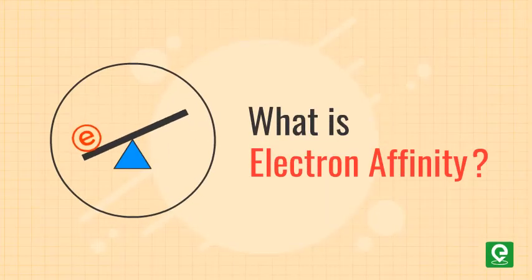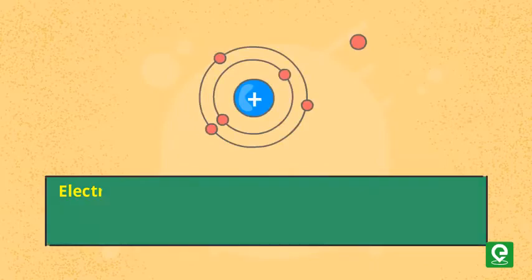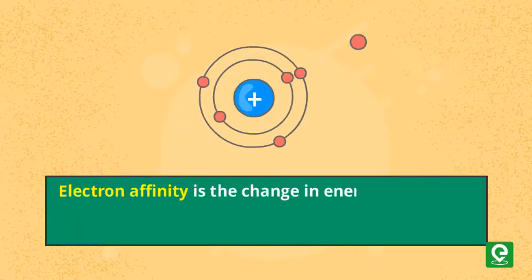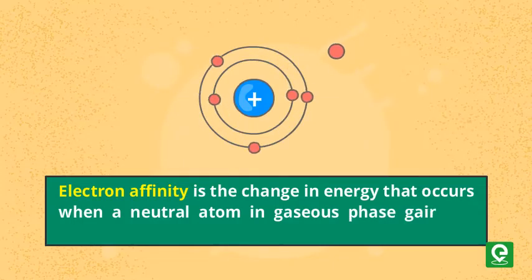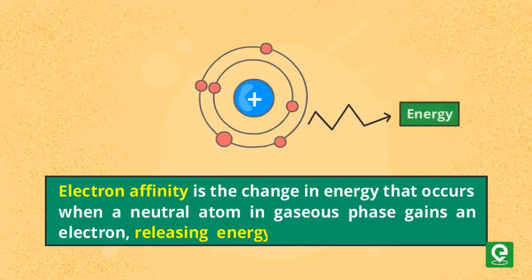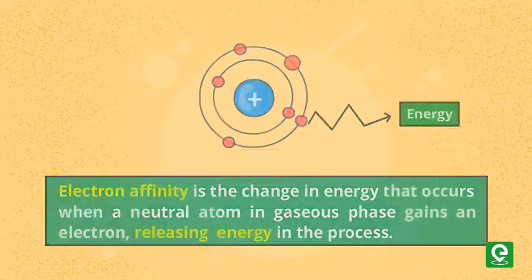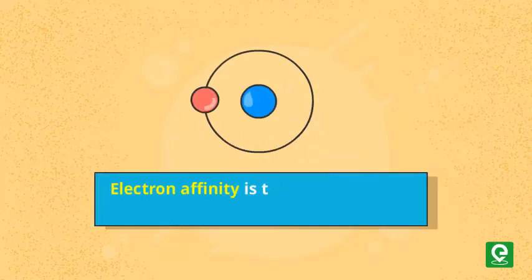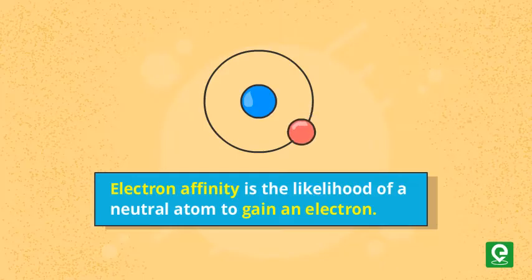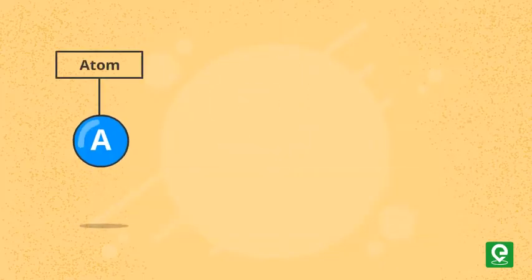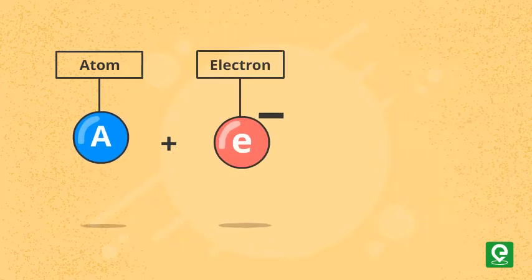What is electron affinity? Electron affinity is the change in energy that occurs when a neutral atom in gaseous phase gains an electron and releases energy in the process. In simple terms, it is the likelihood of a neutral atom to gain an electron. As we know, an electron carries a negative charge, so when a neutral atom gains an electron, it changes into a negative ion.